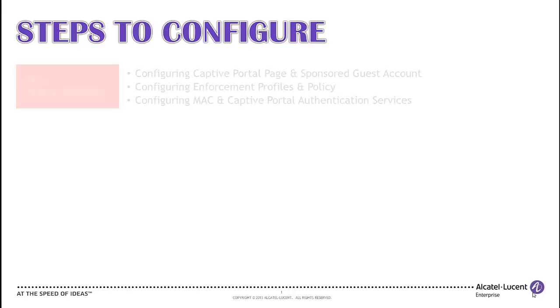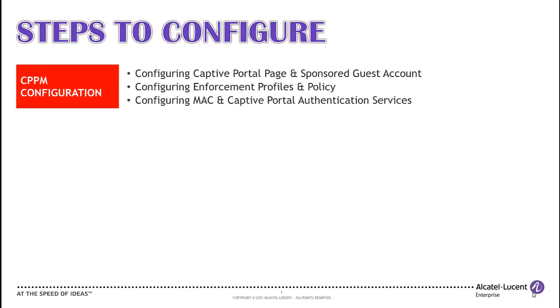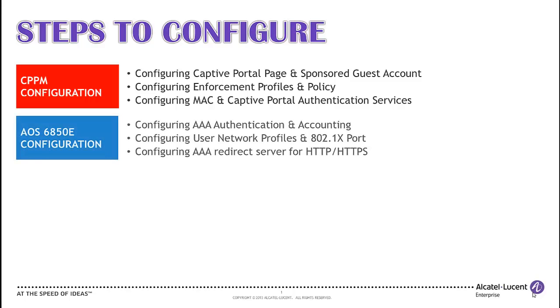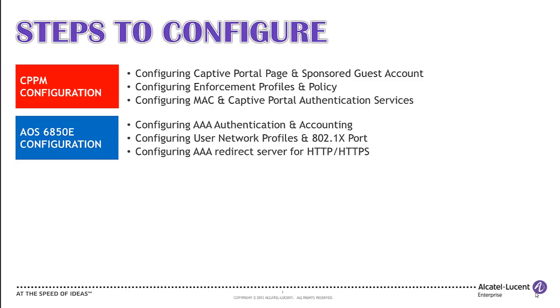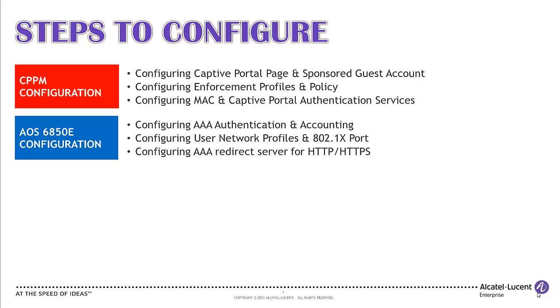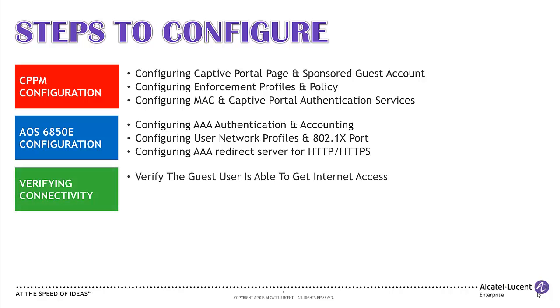Steps to configure CPPM and AOS 6850E for guest network access: Configuring Captive Portal page and sponsored guest account. Configuring enforcement profiles and policies. Configuring MAC and Captive Portal Authentication Services. Configuring AAA Authentication and Accounting. Configuring User Network Profiles and 802.1x. Configuring AAA Redirect Server for HTTP and HTTPS. Finally, verify the user is able to authenticate and get appropriate network access.